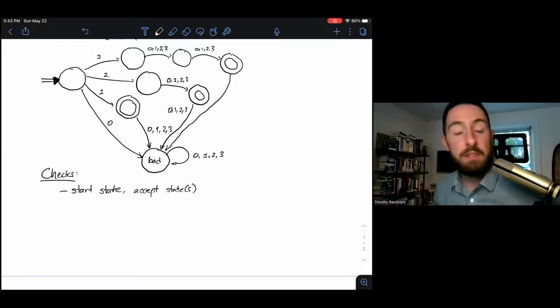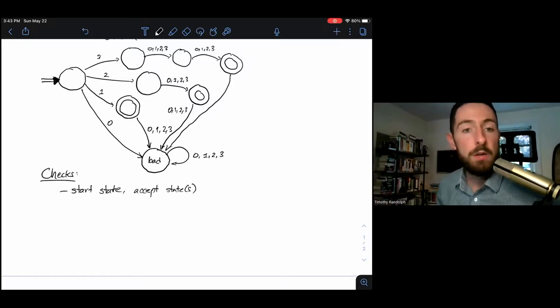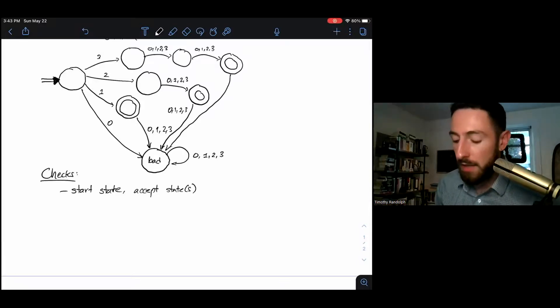Second, do I have accept states where I want them? A DFA does not have to have any specific number of accept states, it can have zero or it can be all accept states. But I want to make sure that I'm accepting exactly where I want to accept. So here, I've got one accept state for strings starting with one, two or three, that accepts if those strings have one, two or three characters, respectively. So that's what I want.